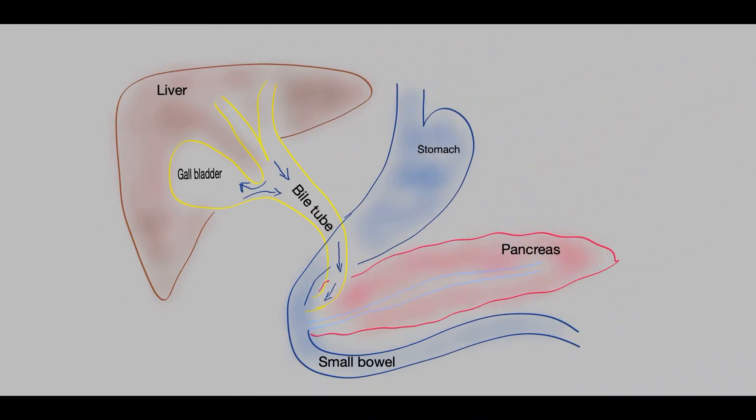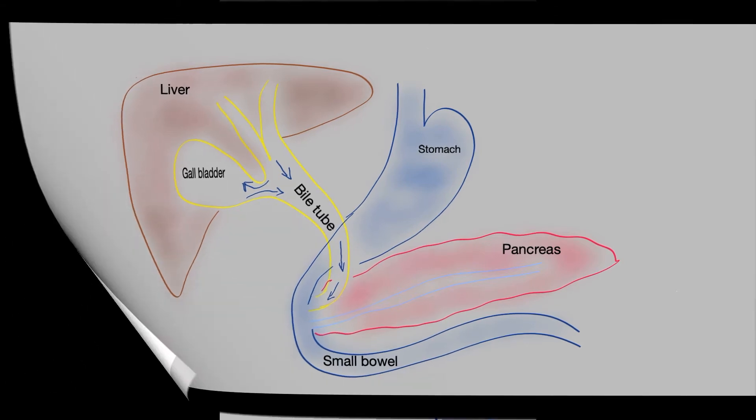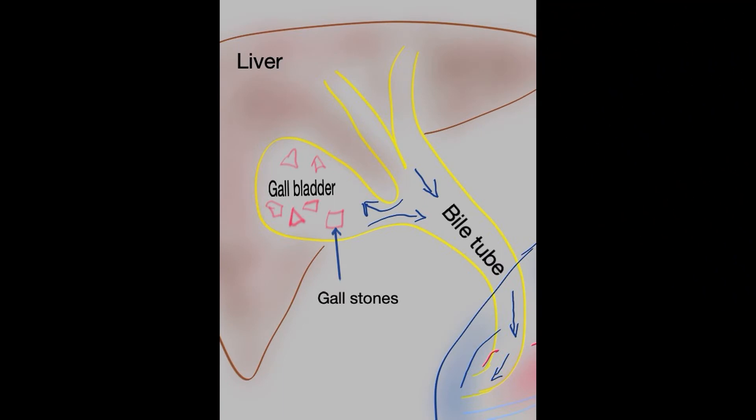To better understand the condition of cholecystitis, we need a quick review of the anatomy. Here is a picture showing the gallbladder, the stomach, and the bile duct. A second picture shows gallstones which are not causing problems — just sitting there and allowing bile to freely move in and out of the gallbladder.